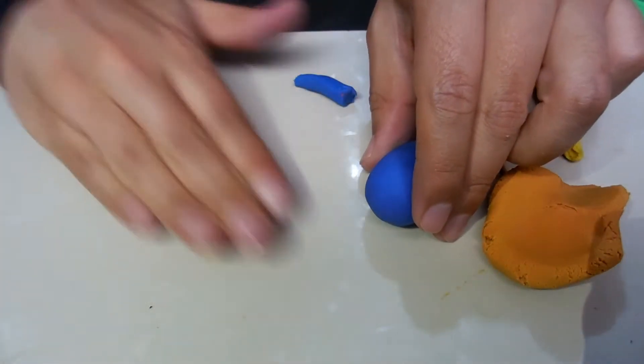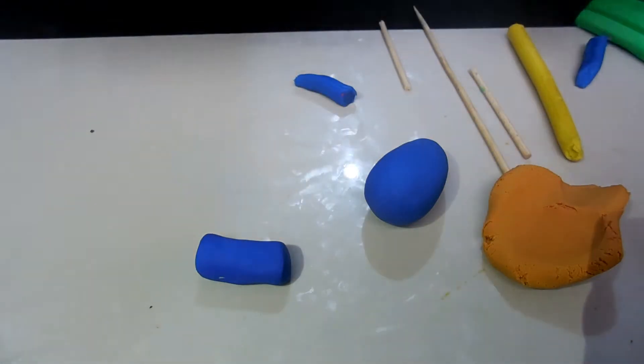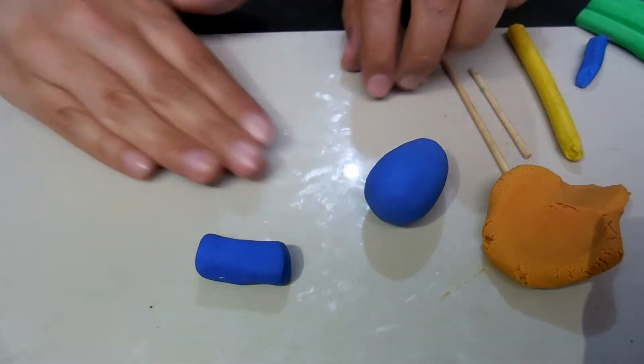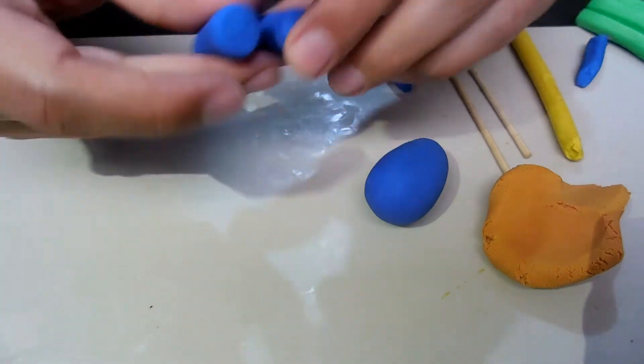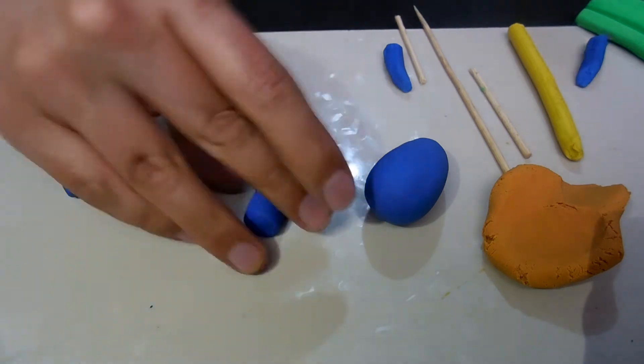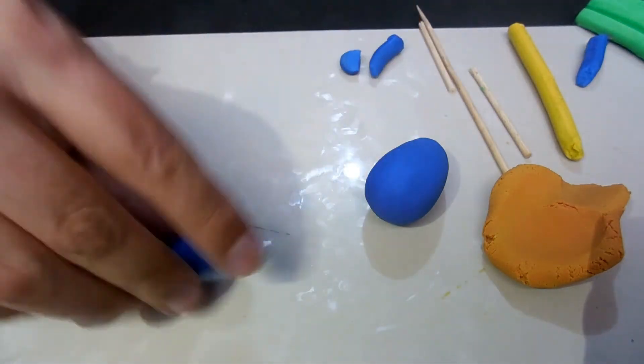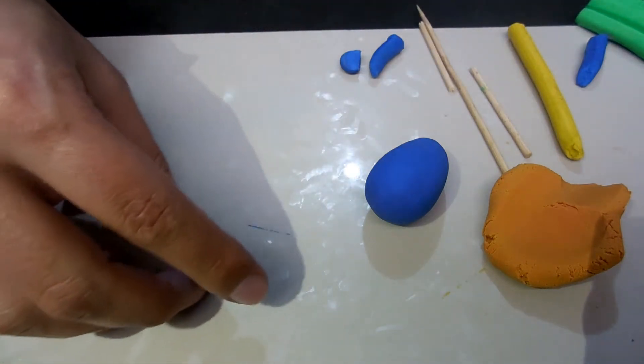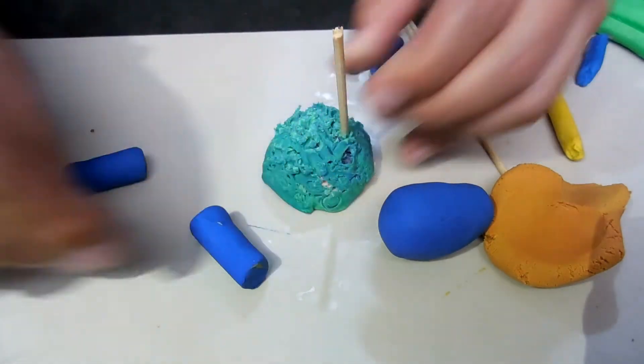Ahora lo que vamos a hacer es coger plastilina de color azul y con una plastilina de color azul vamos a hacer dos cilindros. Vamos a dejar más o menos del mismo tamaño. Los medimos, proporción correcta. Lo corto un poco para que quede más cilíndrico. Listo.